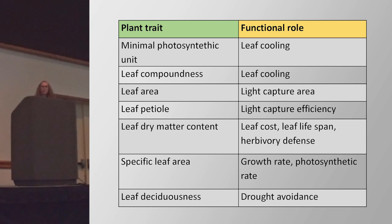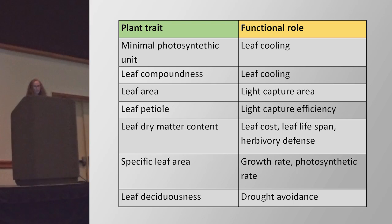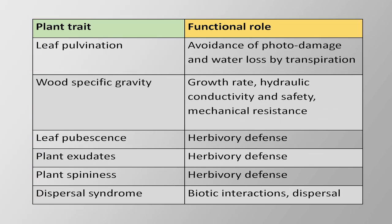We looked at 13 different plant traits. The traits are on the left-hand side and the functional role of each trait is on the right. We looked at minimal photosynthetic unit, leaf compoundness, leaf area, leaf petiole, leaf dry matter content, specific leaf area, leaf deciduousness, leaf pollination, wood-specific gravity, leaf pubescence, plant exudates, and plant spininess — these three related to herbivory defense — and also dispersal syndrome, with the functional role of biotic interactions and dispersal.